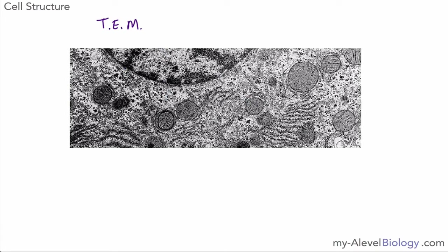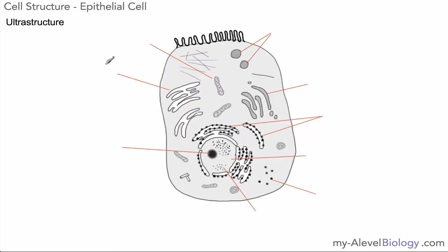In the micrograph you can see there are many more structures than you would normally see — some roundish structures, some strand-like or stringy structures, and this large structure which is the nucleus. There is a lot more detail than you would see with a light microscope. It's quite difficult to identify clearly from a micrograph what all the different parts are, so often what you see is a diagram that shows the different parts in slightly clearer detail.